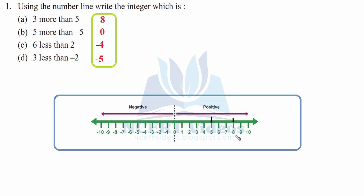You reach eight, so this is what you get when you add three more to five. Part b: five more than negative five. We are at minus five on the number line and we will go five more, that is plus five: one, two, three, four, five. We come to zero, therefore the answer is zero. Now part c: six less than two. We will mark two on the number line and we will go six less.